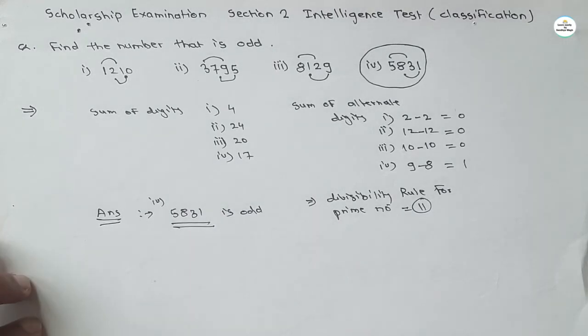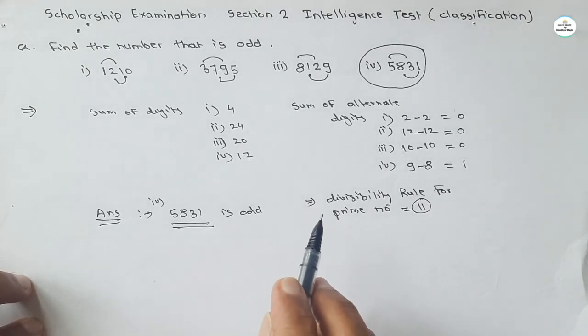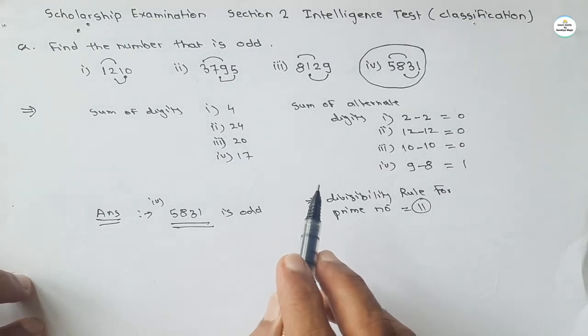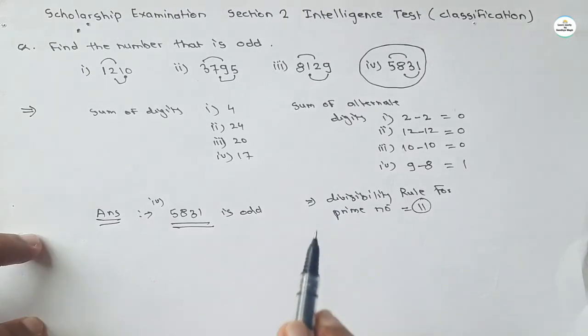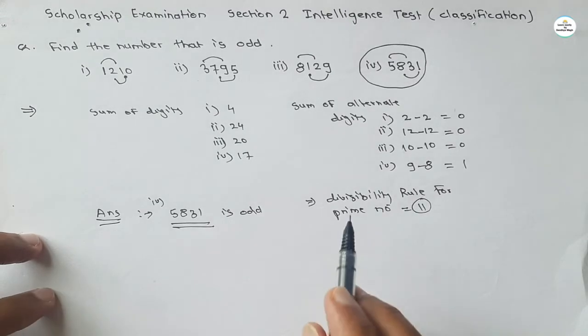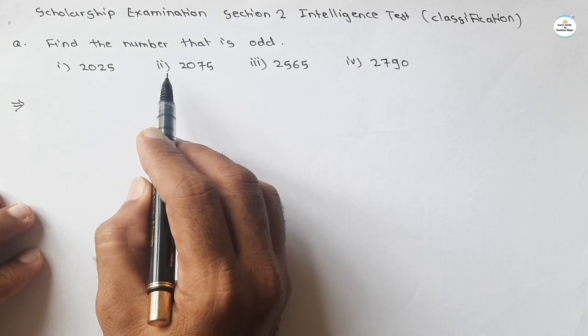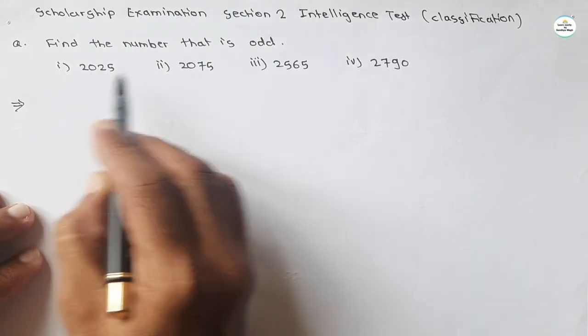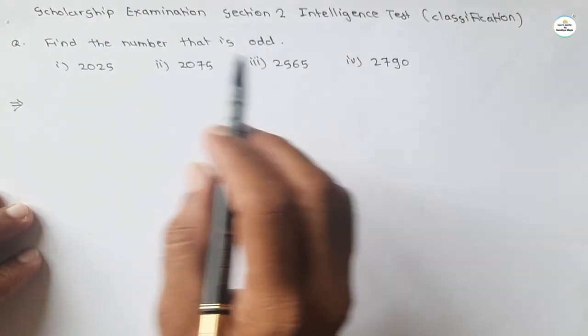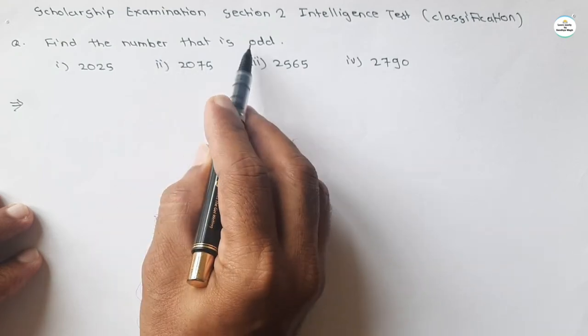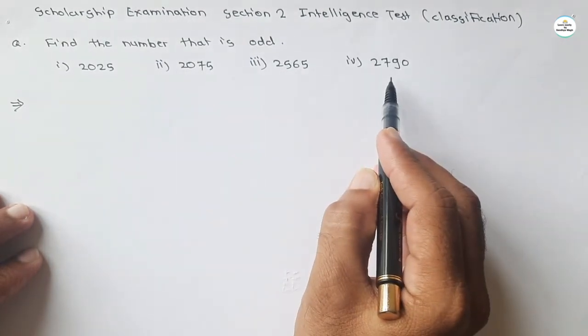Now take this as a sample example and try other examples on your own. Now I will give a test example for you. You solve that example and answer in the comment section. I will reply or I also give the explanation of the answer of this question in the next video. So just see the next test question for you. See this question is for you to test your knowledge. These are the numbers given and you have to find the odd number from this series.